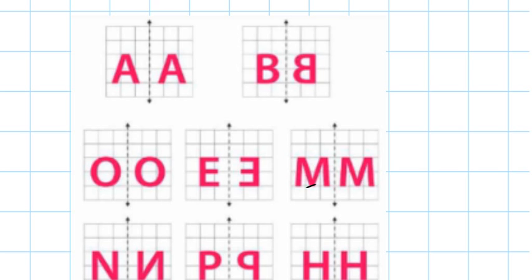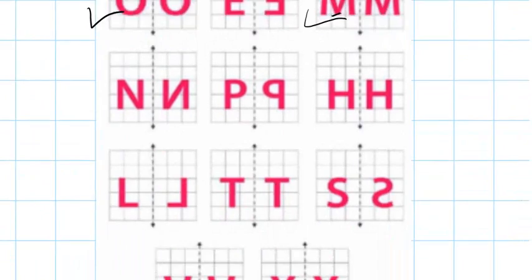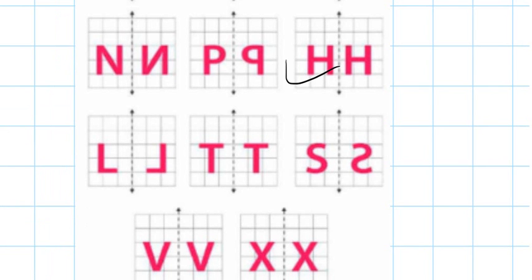A looks the same, O looks the same, M looks the same. And if I come down, H looks the same, T looks the same, V and X look the same.